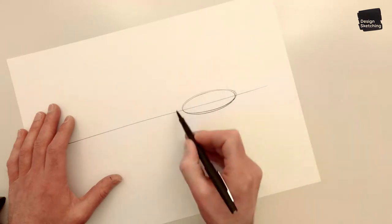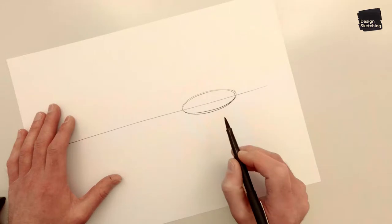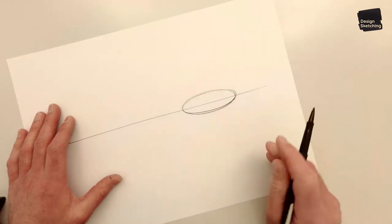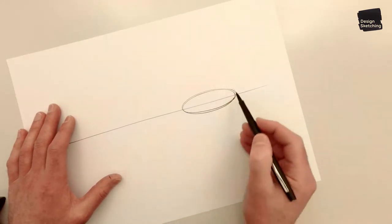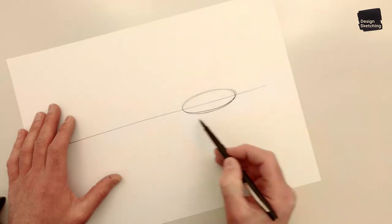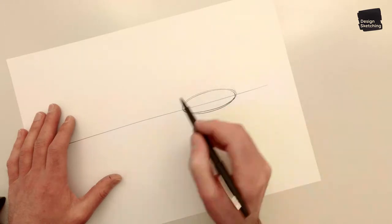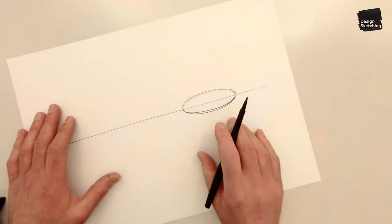So what I'm doing is ghostlining. I draw the ellipse in the air first before I drop my pen on the page. And that really helps to get that motion fluent and feel the ellipse before you put it on paper.